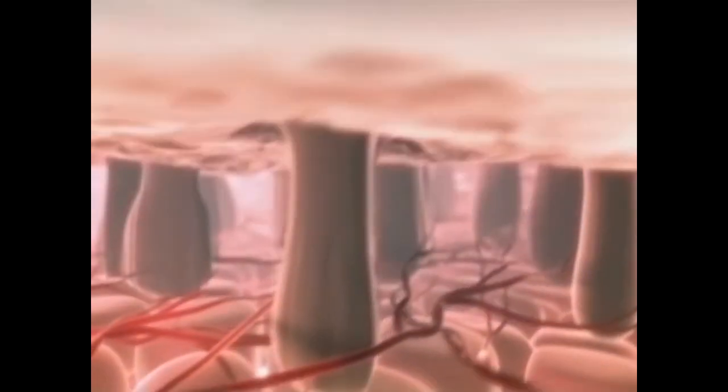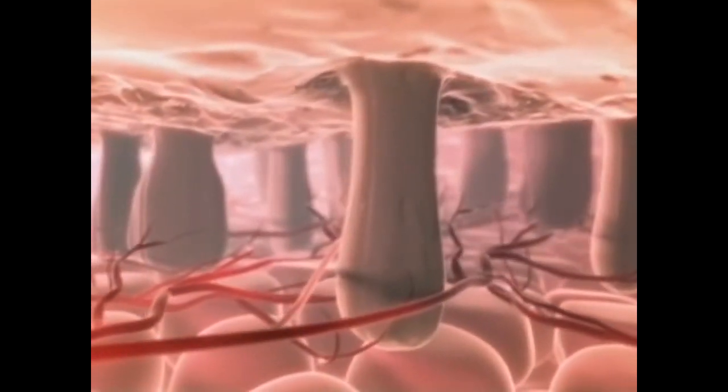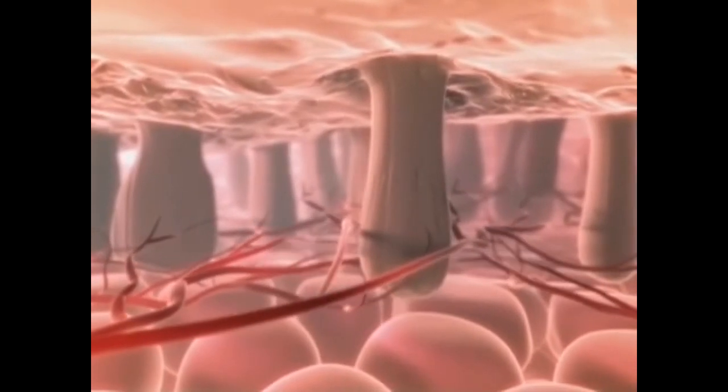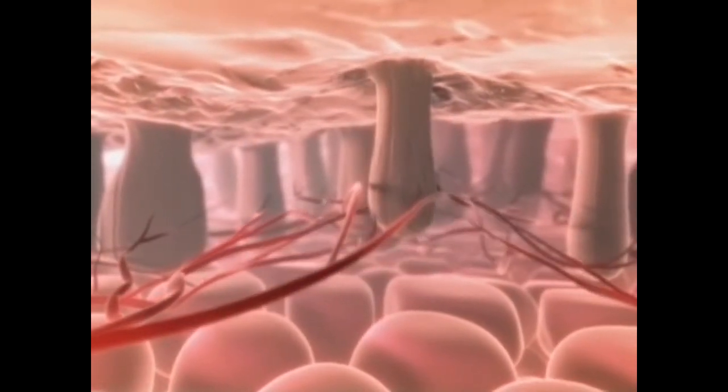For reasons not known, the DHT triggers his hair follicles to shrink. As they get smaller they produce weaker, shorter hairs.